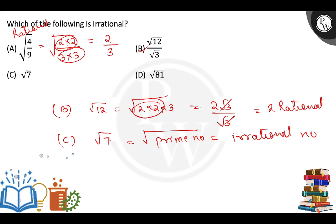But let's check option number D. We can write root 81 as 9 into 9. It is a pair of pair. So what is 9? So how is it rational?